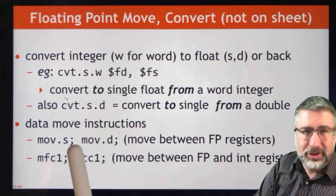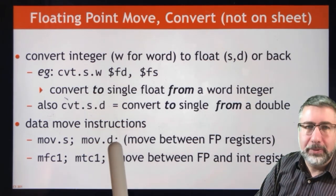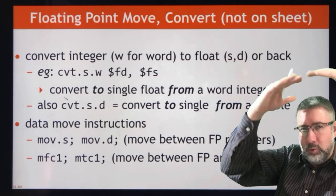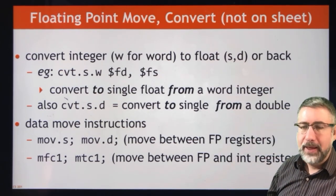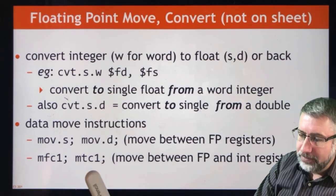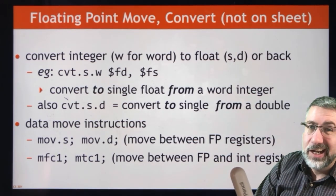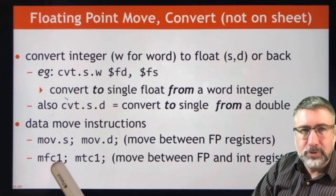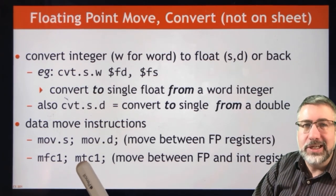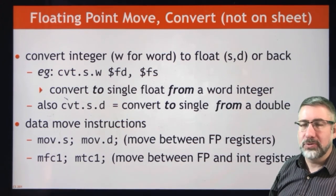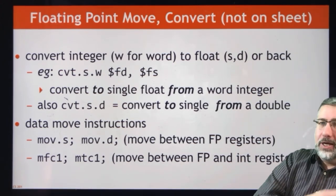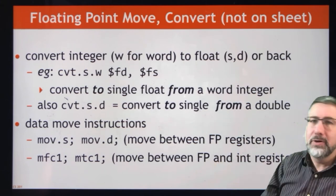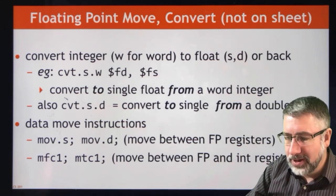You can also move information in single precision or double precision — that means taking a copy from one register and putting it into another register. You can move back and forth between floating point registers and regular registers using MFC1 (move from coprocessor 1) and MTC1 (move to coprocessor 1), allowing you to copy data from a floating point register to a CPU register or from a CPU register to a coprocessor register.